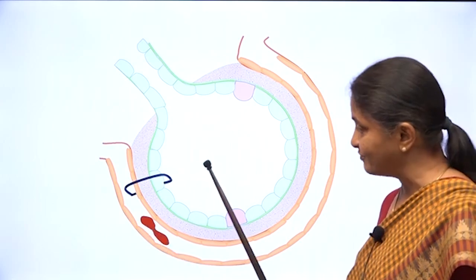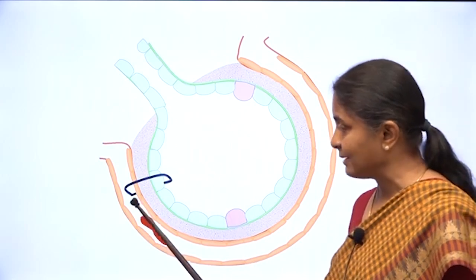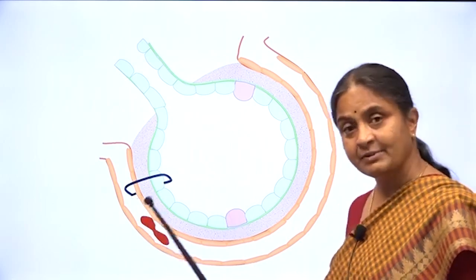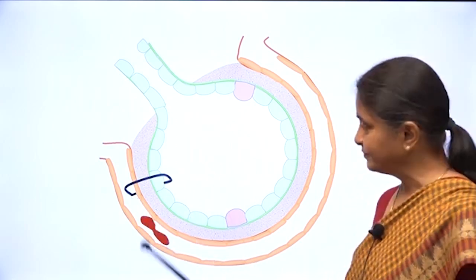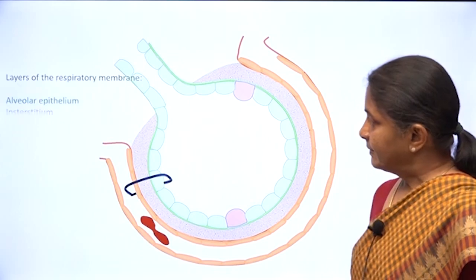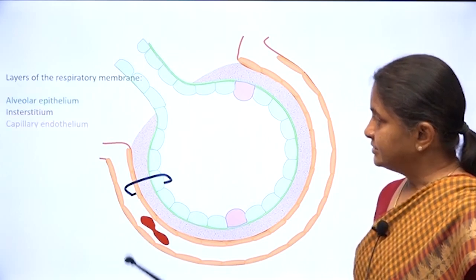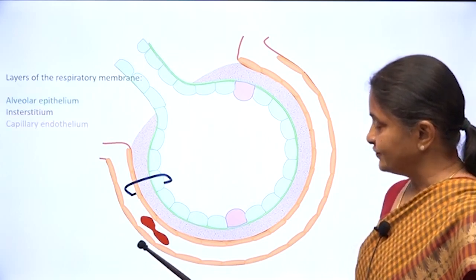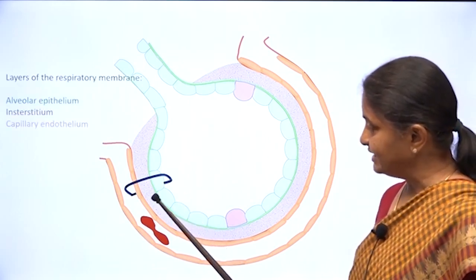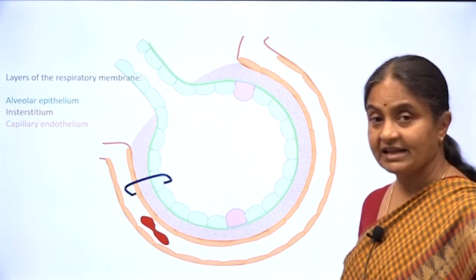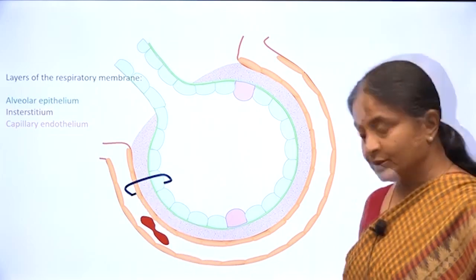Oxygen has to diffuse from the alveolus into the capillary and carbon dioxide in the reverse direction. These are the layers of the respiratory membrane: alveolar epithelium, interstitium, and capillary endothelium.